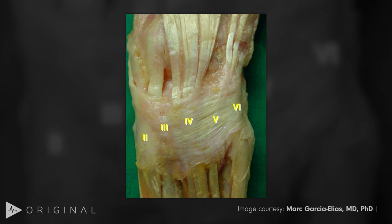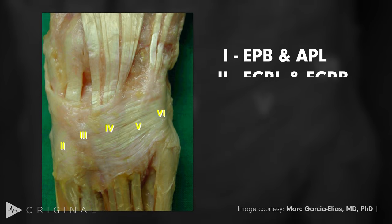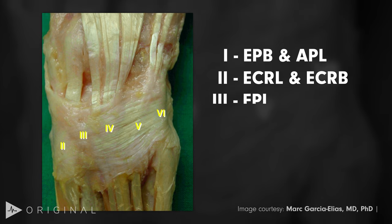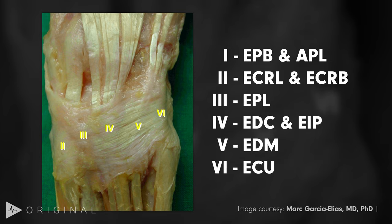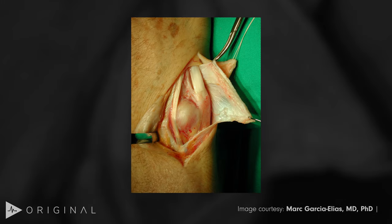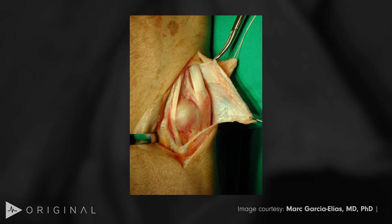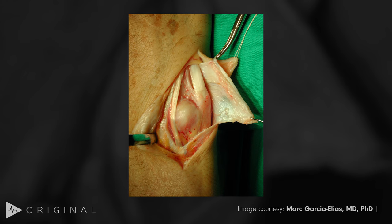On the dorsal hand anatomy, this cadaveric dissection by Mark Garcia-Lias shows the extensor tendons contained in six compartments. The first compartment is the EPB and APL. The second is the ECRL and ECRB. The third is the EPL, which has a curvilinear course going ulnar to Lister's tubercle — a bony prominence on the dorsal radial wrist. The fourth compartment contains the EDC tendons to the index, long, ring, and small fingers, plus the independent EIP. The fifth is the EDM, and the sixth is the ECU — the only extensor tendon running with the ulna, visible in its ECU subsheath when the extensor retinaculum is opened.